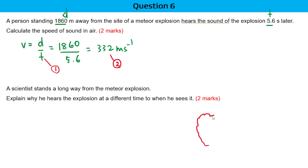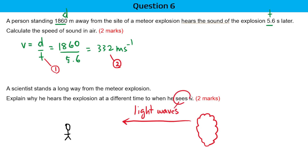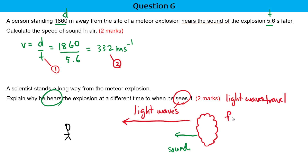If there is a meteor explosion and the scientist is standing here, two waves are traveling towards him. The first is light waves — it's because of light waves that he's able to see the explosion. And it is because of sound waves that he will be able to hear it. The speed of light is so much faster than the speed of sound, that's why he will see the explosion first and then hear the sound later. Your explanation should be: light waves travel faster than sound waves.